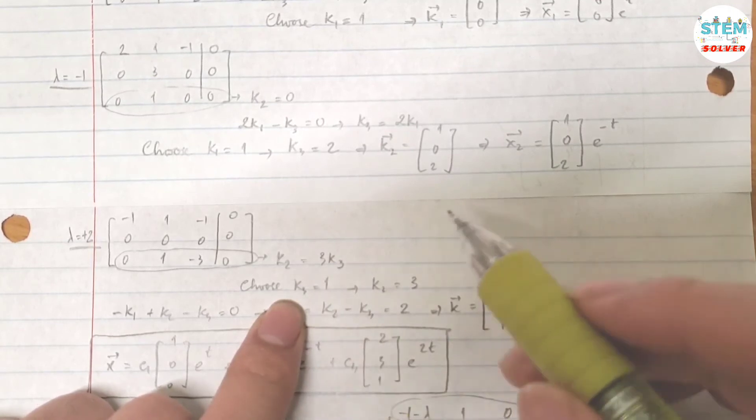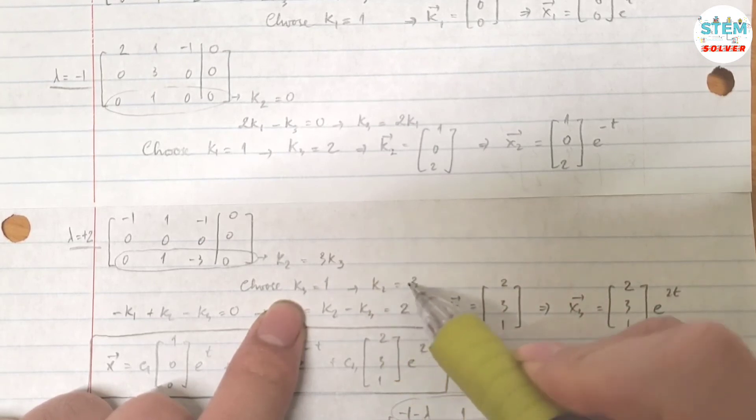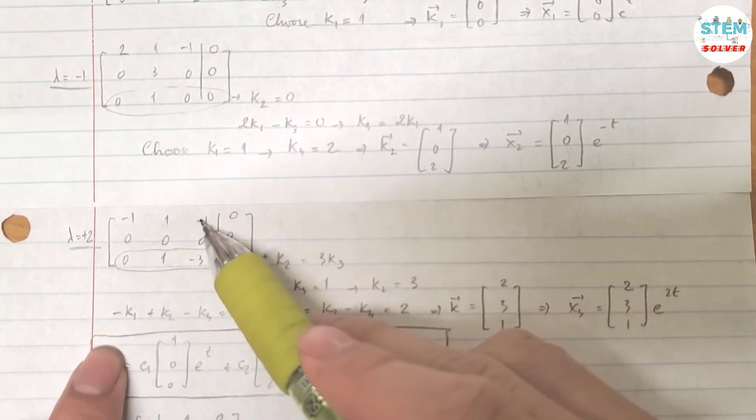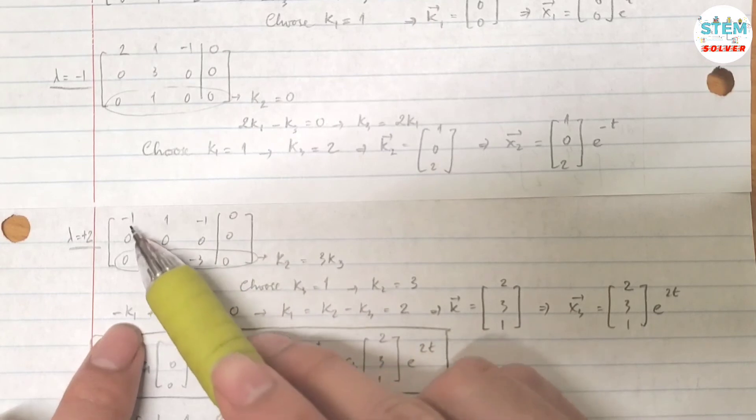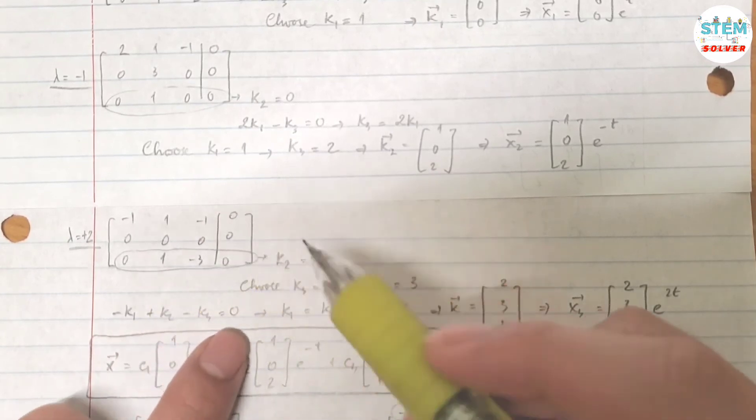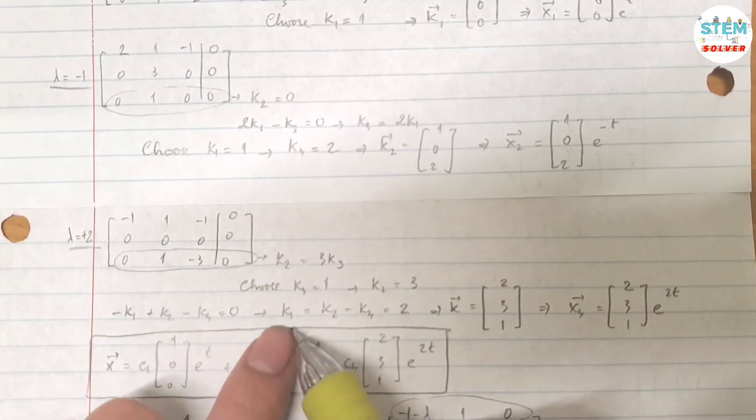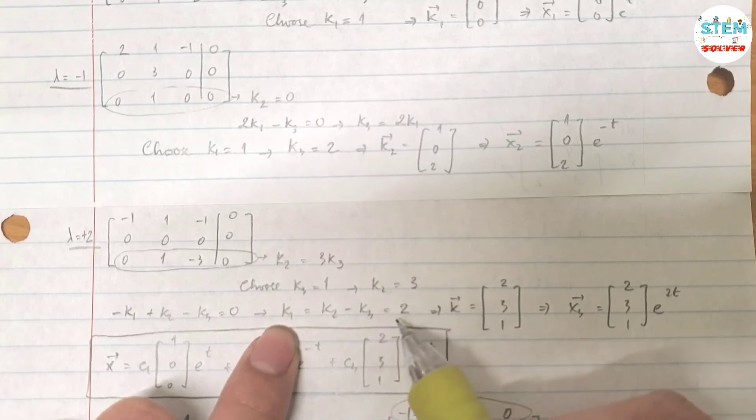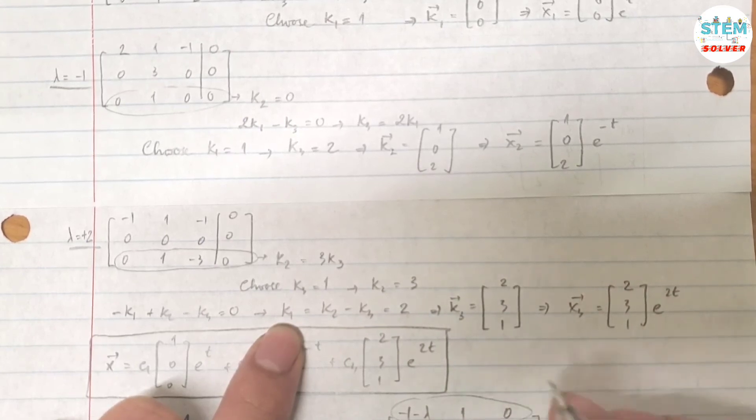I got k2 equals 3. Now I'm going to use the first equation. So negative k1 plus k2 minus k3 equals 0, so k1 equals k2 minus k3. K2 is 3, k3 is 1, so I got k1 equals 2. Then my vector k3 is 2, 3, 1.